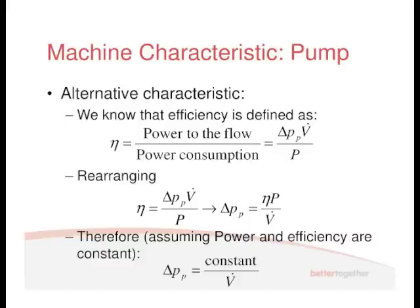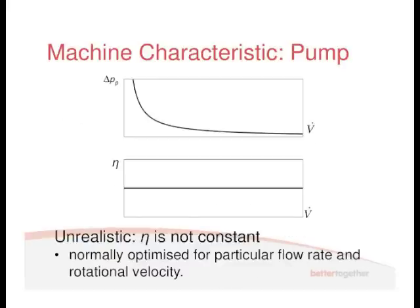Now, if we assume that the power is constant and the efficiency is constant, then we've got a relationship where delta P_p is some constant over V dot. And from your mathematics, we should know that something where one over a number is, and that's a graph that looks a little bit like that. We get this sort of characteristic.